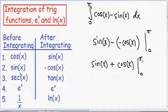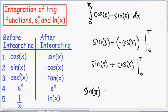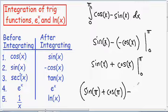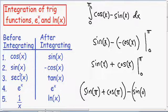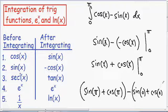Now I'm going to plug my upper limit, which is pi, everywhere there is an x. So instead of writing the sine of x, I'm going to put the sine of pi, and instead of writing the cosine of x, I'm going to put the cosine of pi. I'll put a parenthesis around everything. Then I'm going to subtract my lower limit, plugging zero everywhere there's an x: the sine of zero plus the cosine of zero, with a parenthesis around everything.